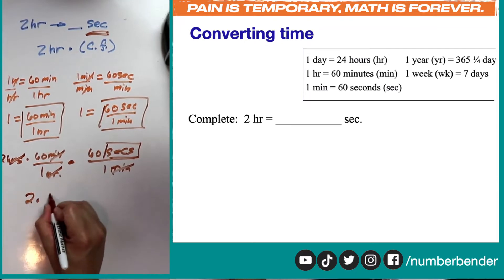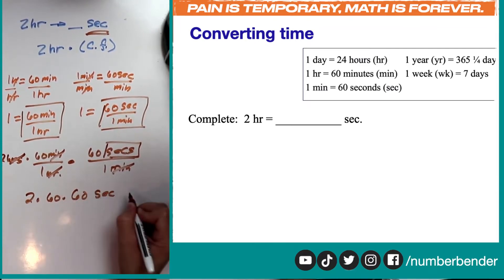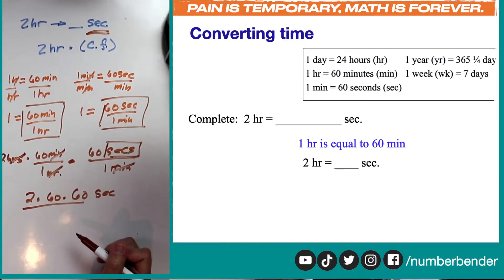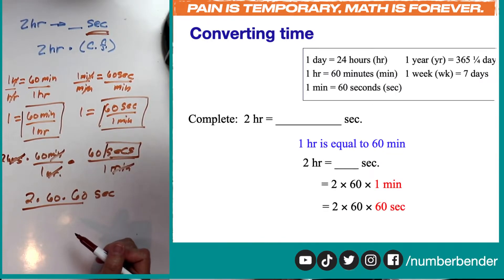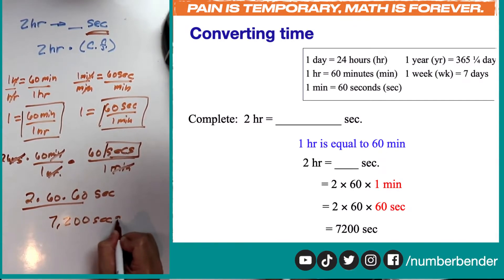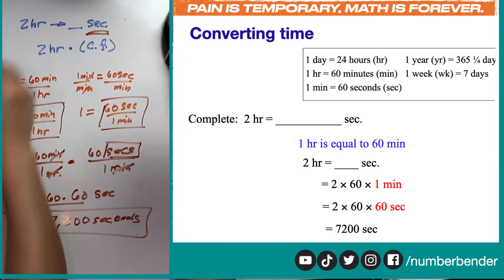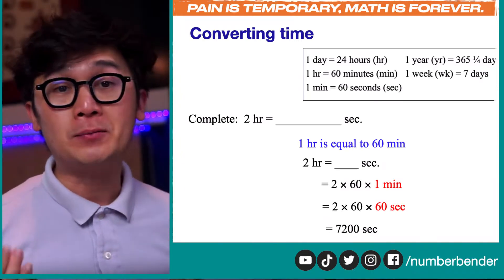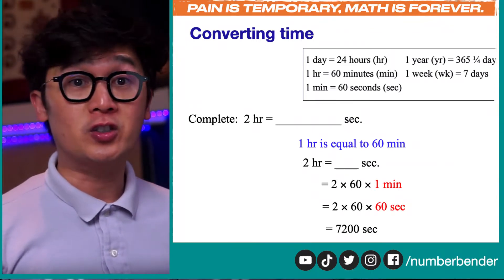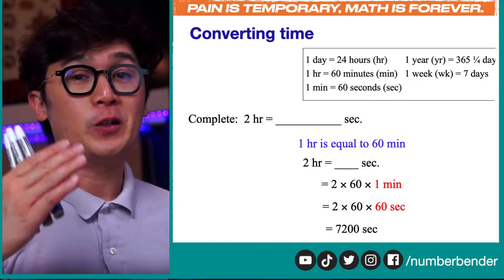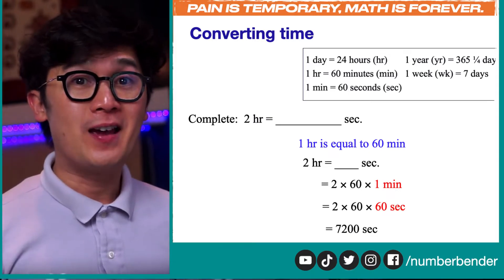So we have two times 60 times 60 — don't forget the unit of measurement. Using our calculator, two times 60 times 60 equals 7,200 seconds. So there are 7,200 seconds in two hours. This is the same technique we used in our previous lessons on conversion, and it works just as well for units of time.